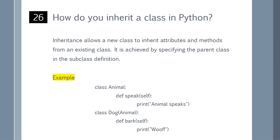How do you inherit a class in Python? Inheritance allows a new class to inherit attributes and methods from an existing class. It is achieved by specifying the parent class in the subclass definition. You can refer to the example shown on the screen.